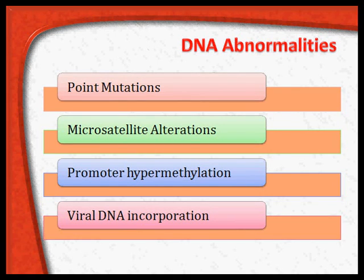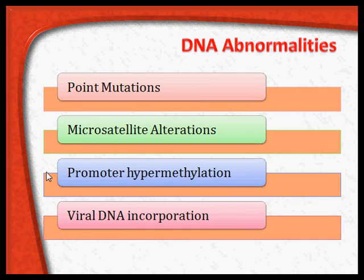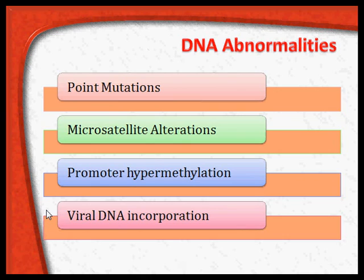Likewise, there could be abnormalities in the DNA. There could be single point mutations in the DNA sequence, microsatellite alterations, or promoter hypermethylations. If the promoter regions are hypermethylated, that results in excess formation of genetic material and can lead to tumor formation. Sometimes viral DNA can get incorporated into the genome of the host cell, forming a new DNA sequence containing both host and viral DNA, which when it proliferates can result in tumor.